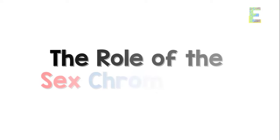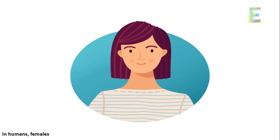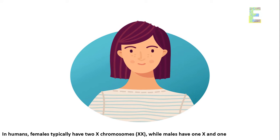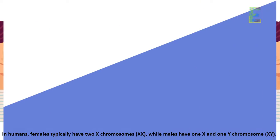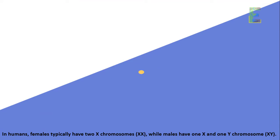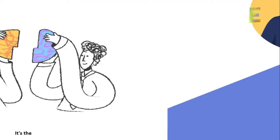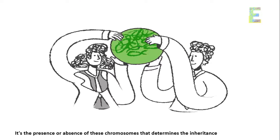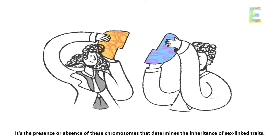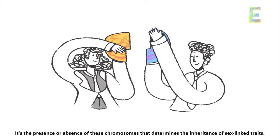The Role of the Sex Chromosomes: In humans, females typically have two X-chromosomes, while males have one X and one Y-chromosome. It's the presence or absence of these chromosomes that determines the inheritance of sex-linked traits.